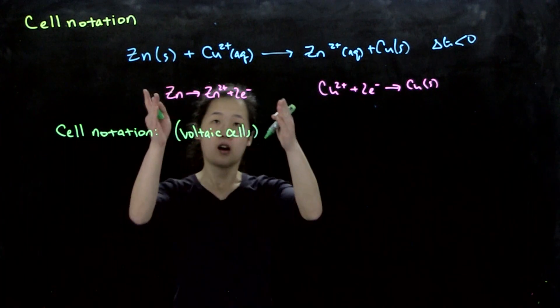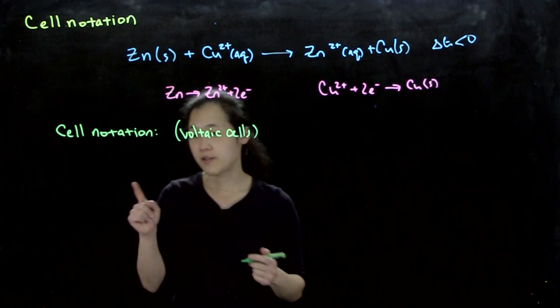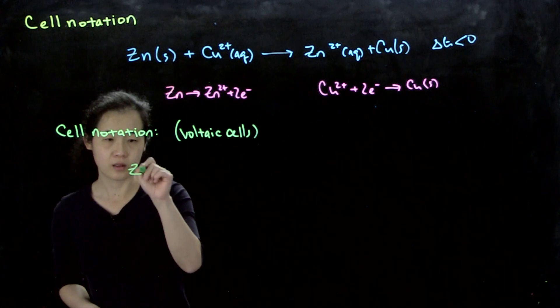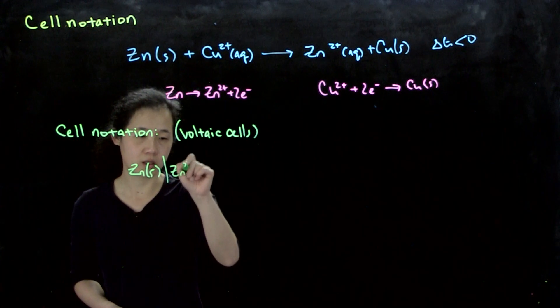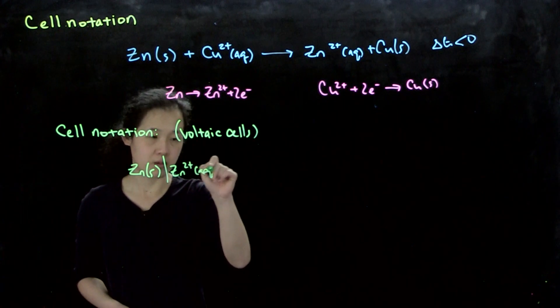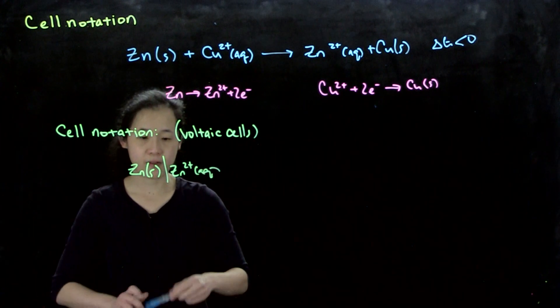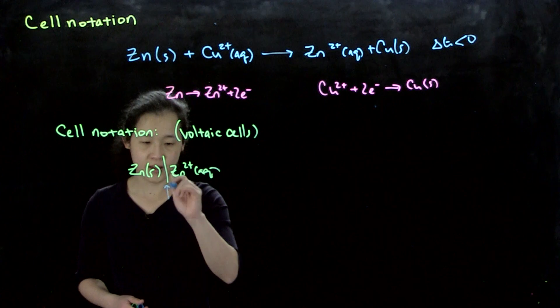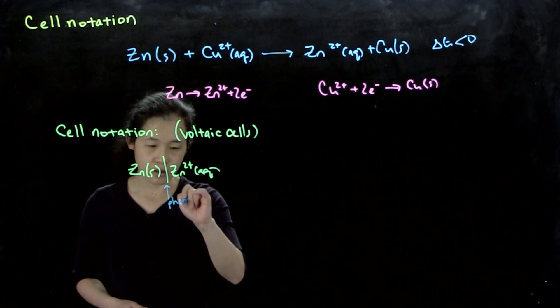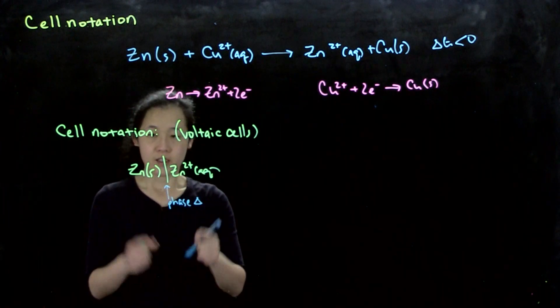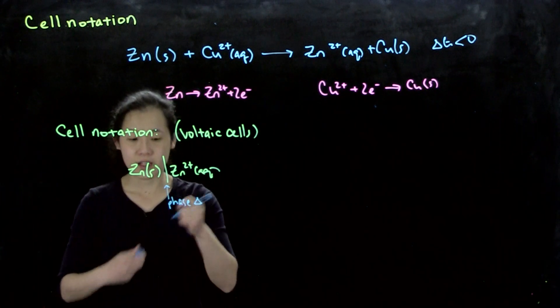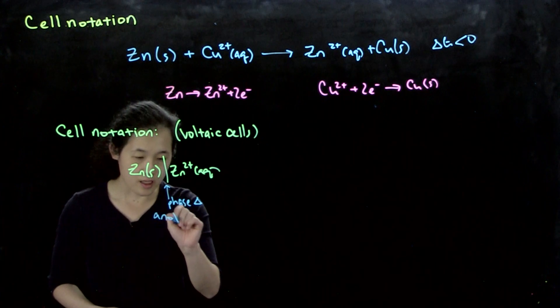we can take our anodic reaction and write it on the left side. This vertical line refers to a phase change - we're going from solid to solution phase. On this left side is our anodic reaction at the anode.